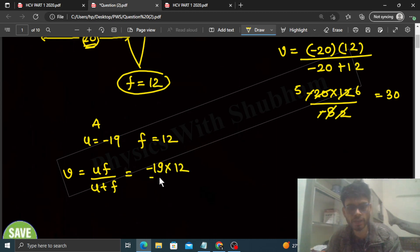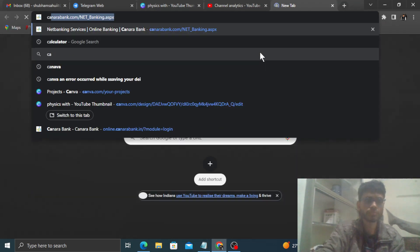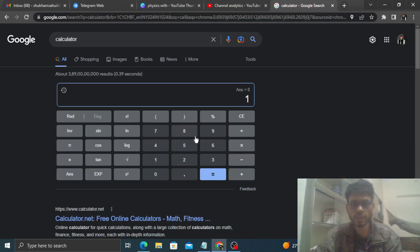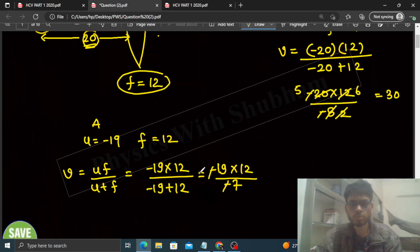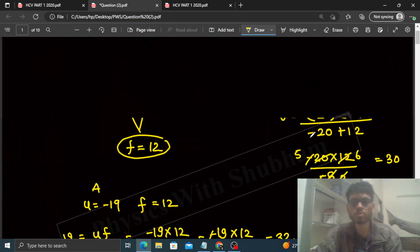So v will be simply uf divided by u plus f. So put the values: minus 19 into 12 divided by minus 19 plus 12. So that is basically minus 19 into 12 divided by - this becomes minus 7. So minus and minus will cancel. Let me solve this using calculator to save time. How much was it? 19 into 12 divided by 7: 32.57. Okay, so this is coming 32.57.